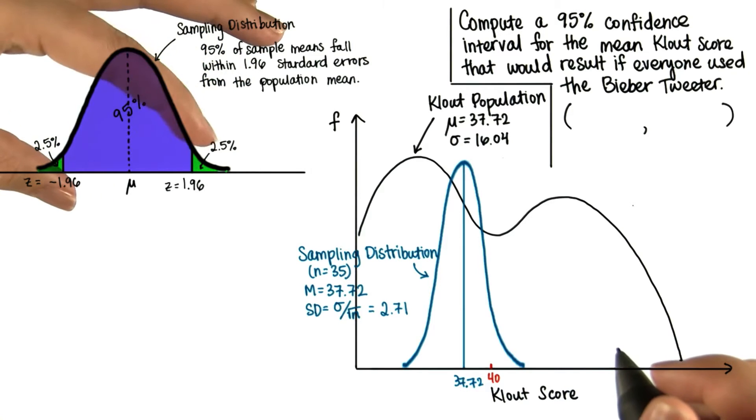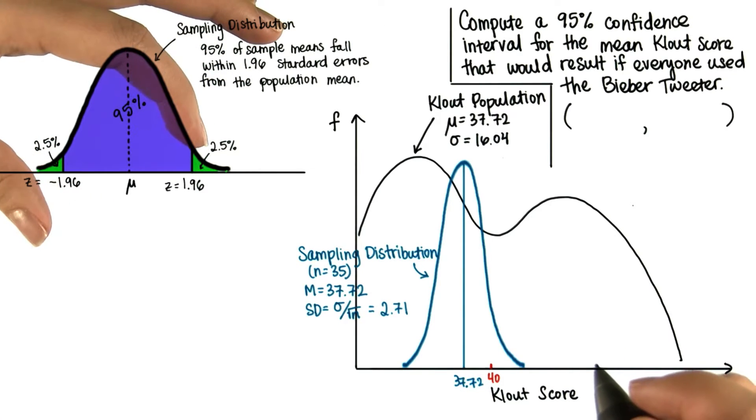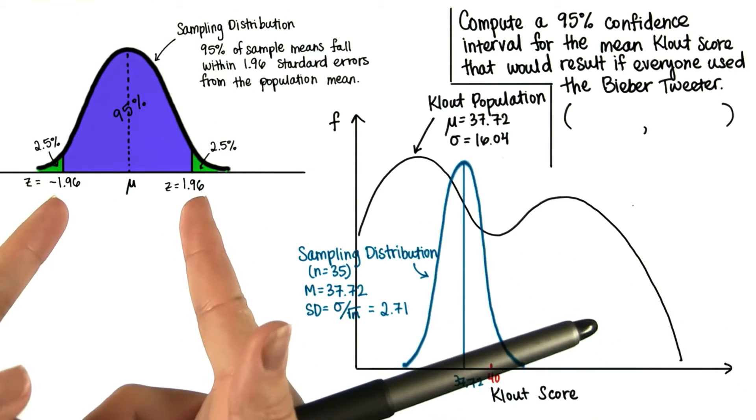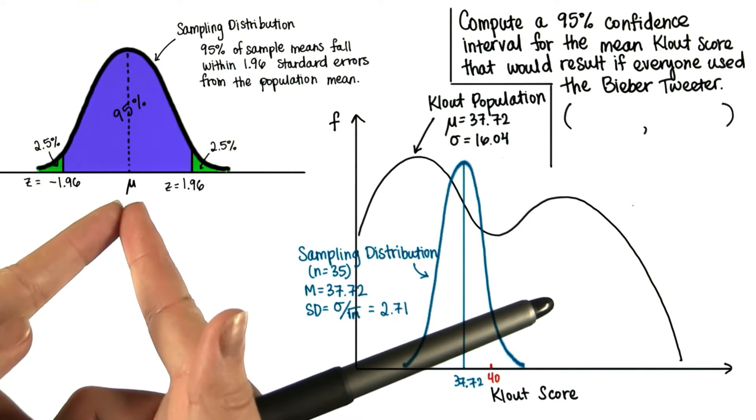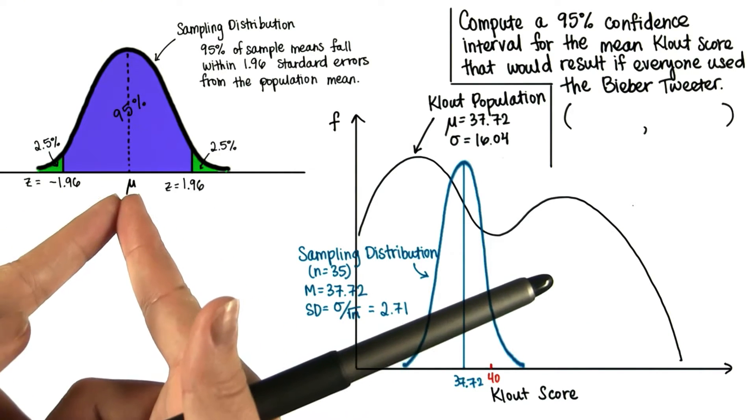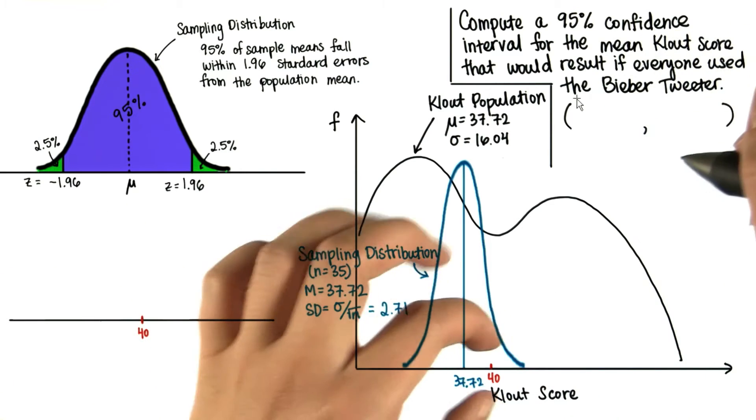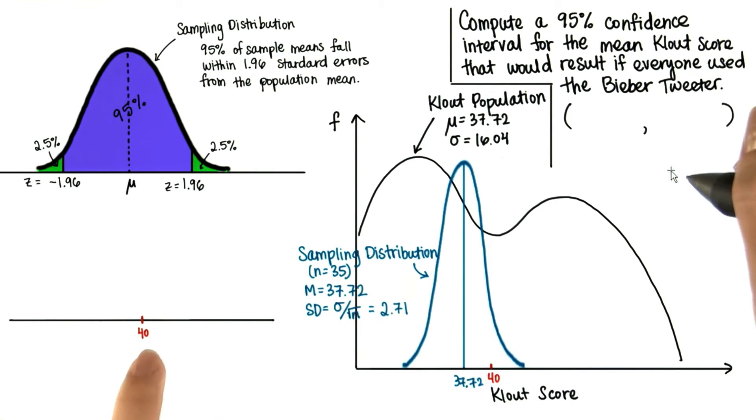We know that 95% of sample means will be within 1.96 standard deviations of the population mean, which is also the mean of sample means. Now, let's just zoom in on this part over here.